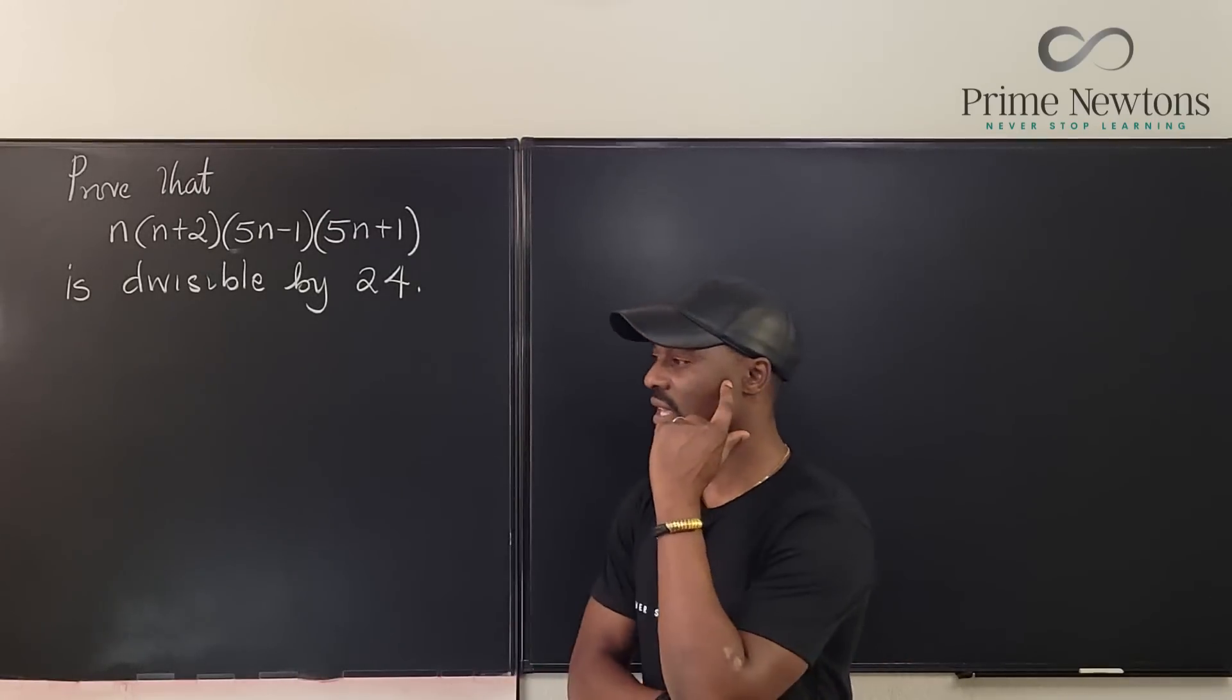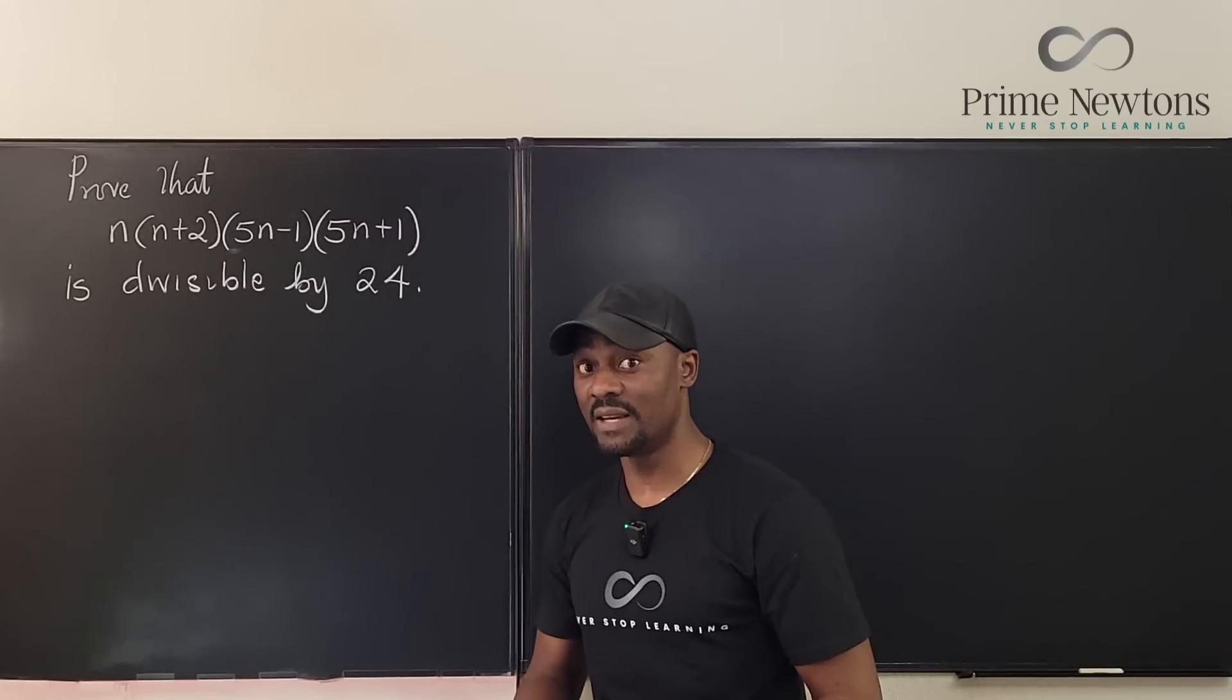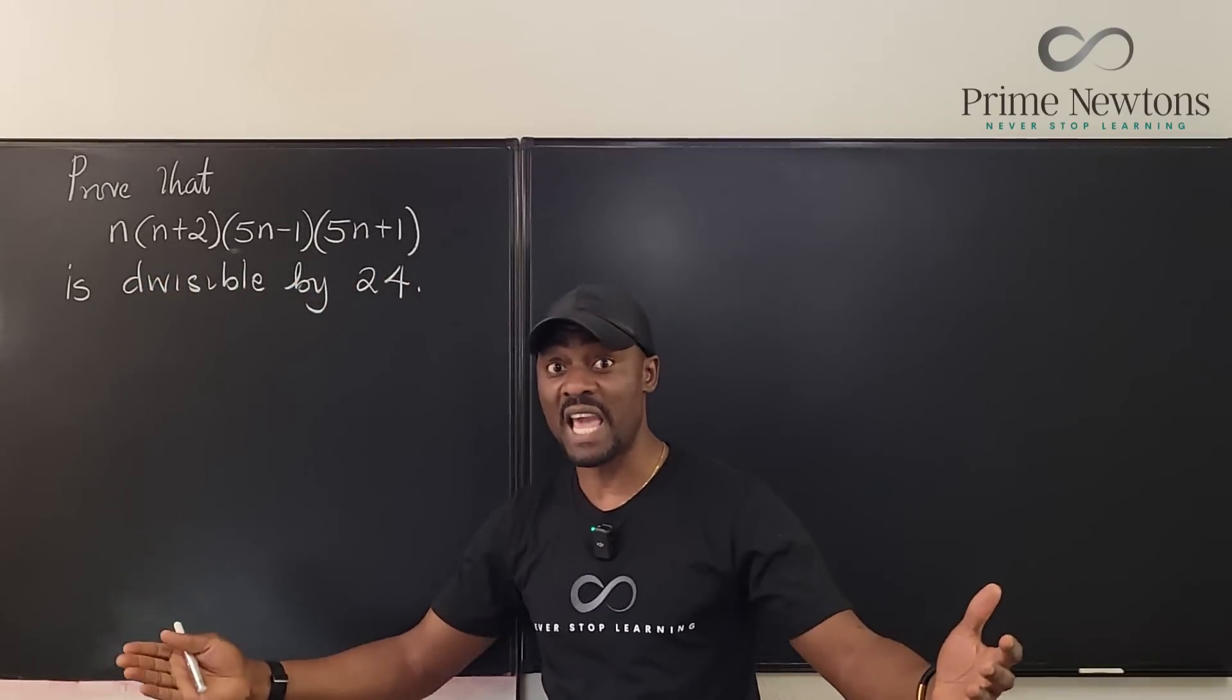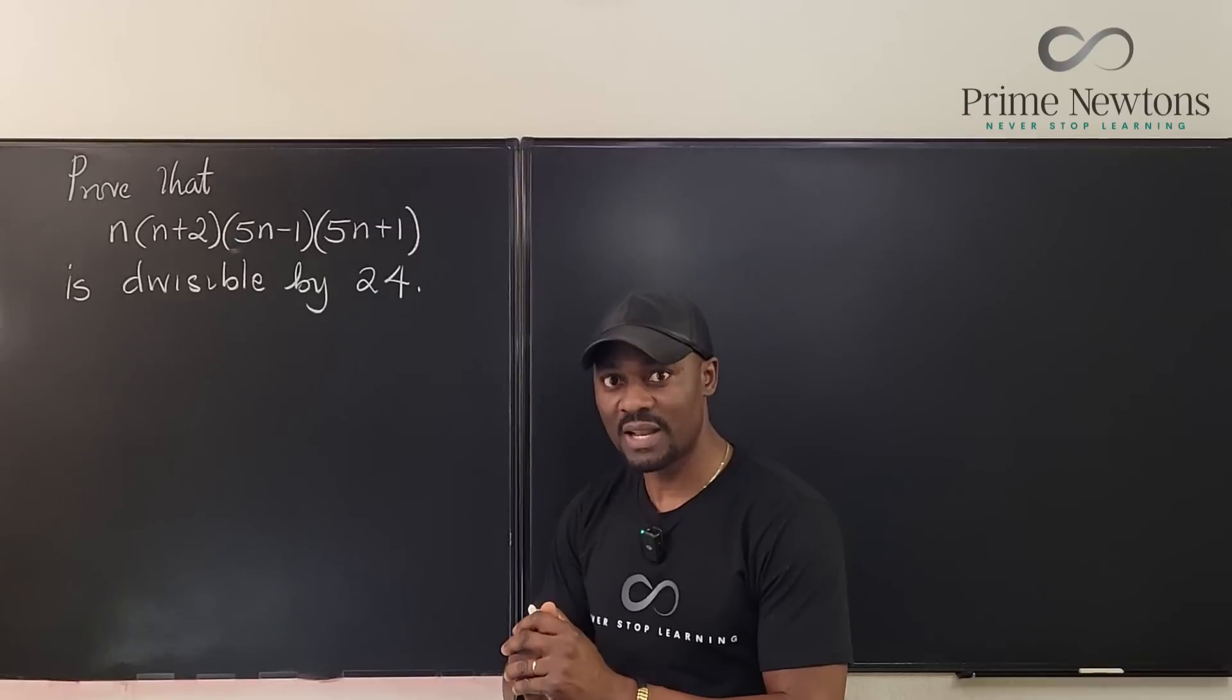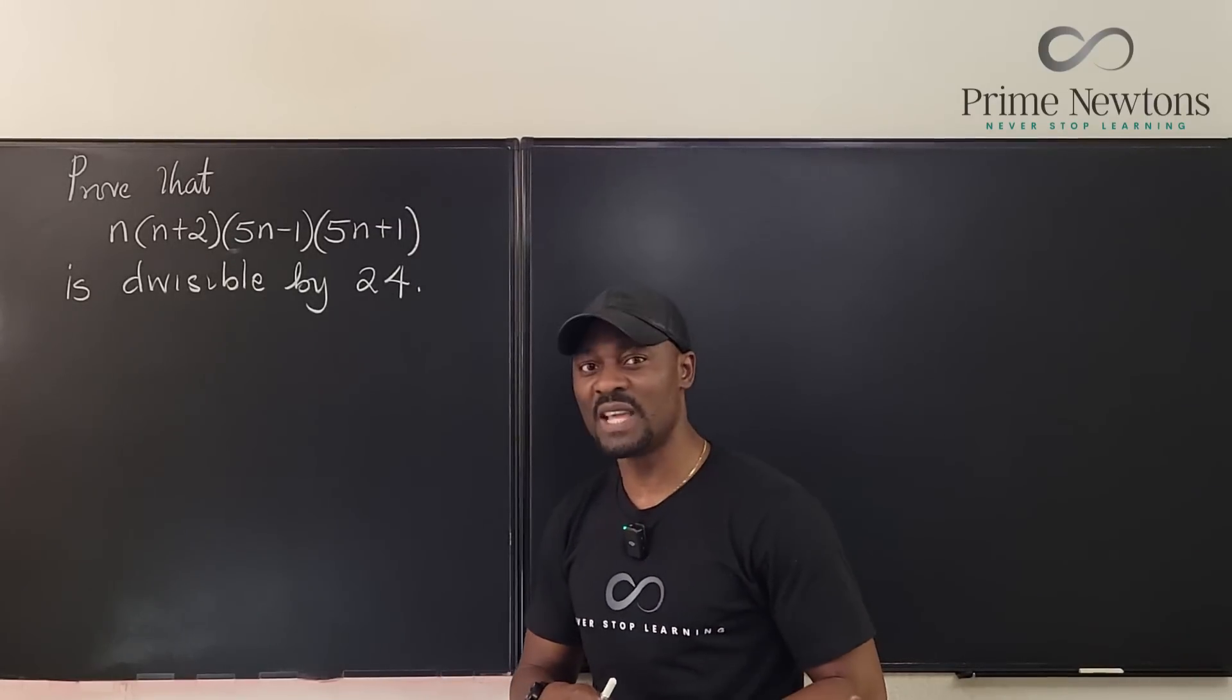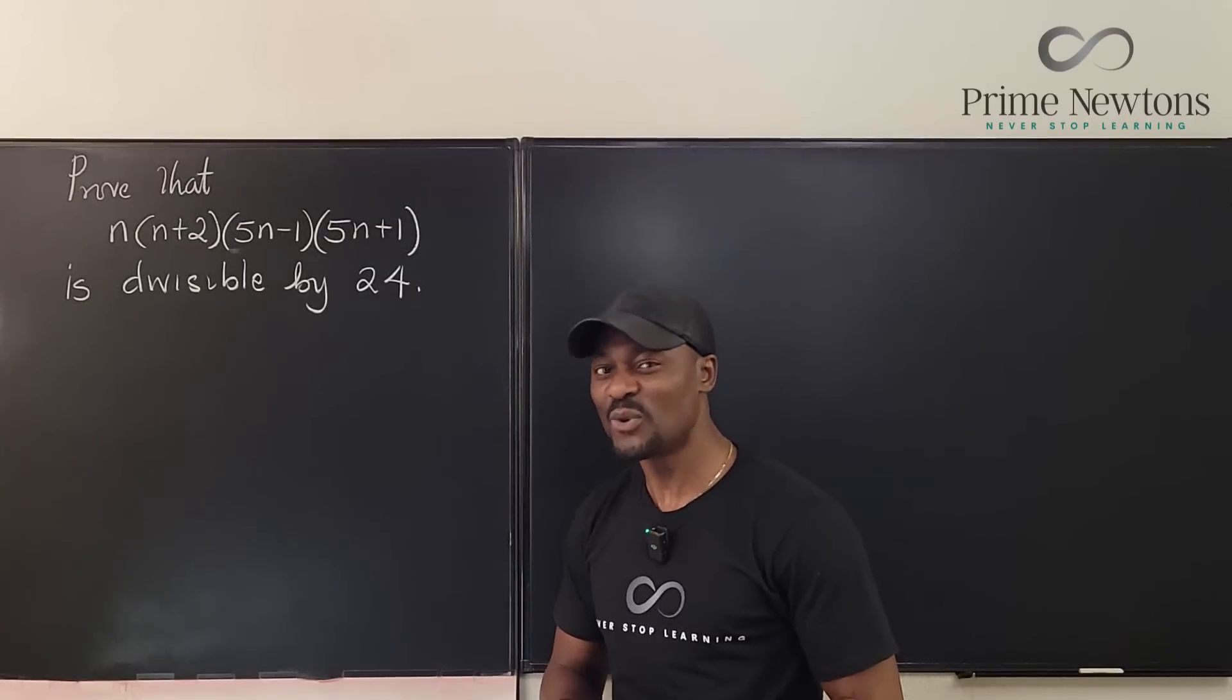So I started thinking which one is easier to start with, and I came up with this idea that if I can show that this is always divisible by 8 no matter what n is, then I'm good and I can work myself into showing that it's divisible by 3. I think the option of the 8 is actually easier because I can easily see it.